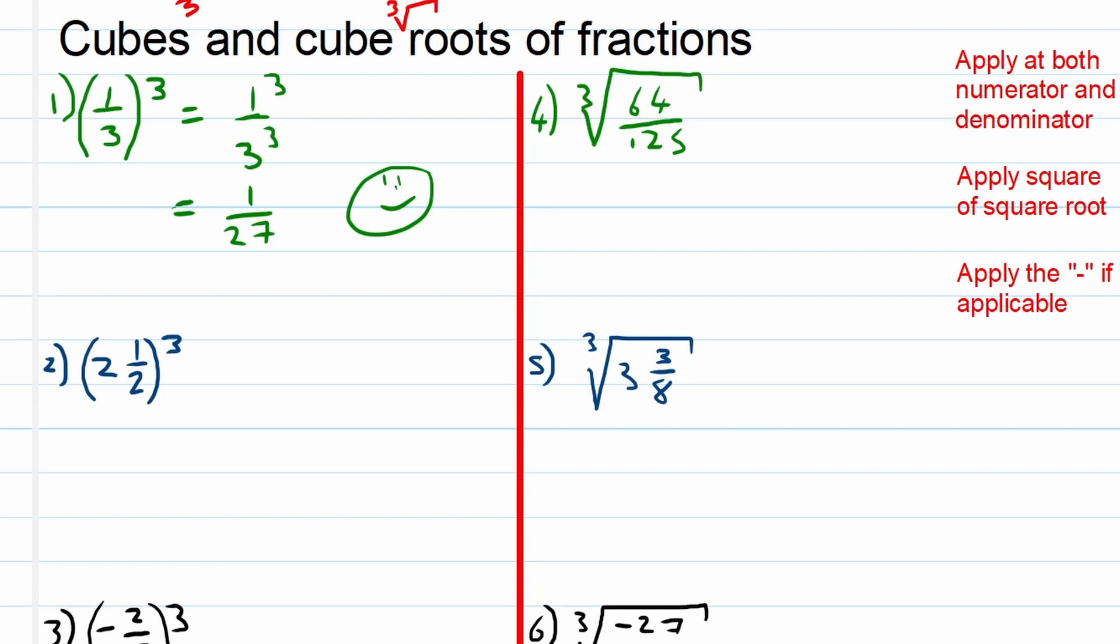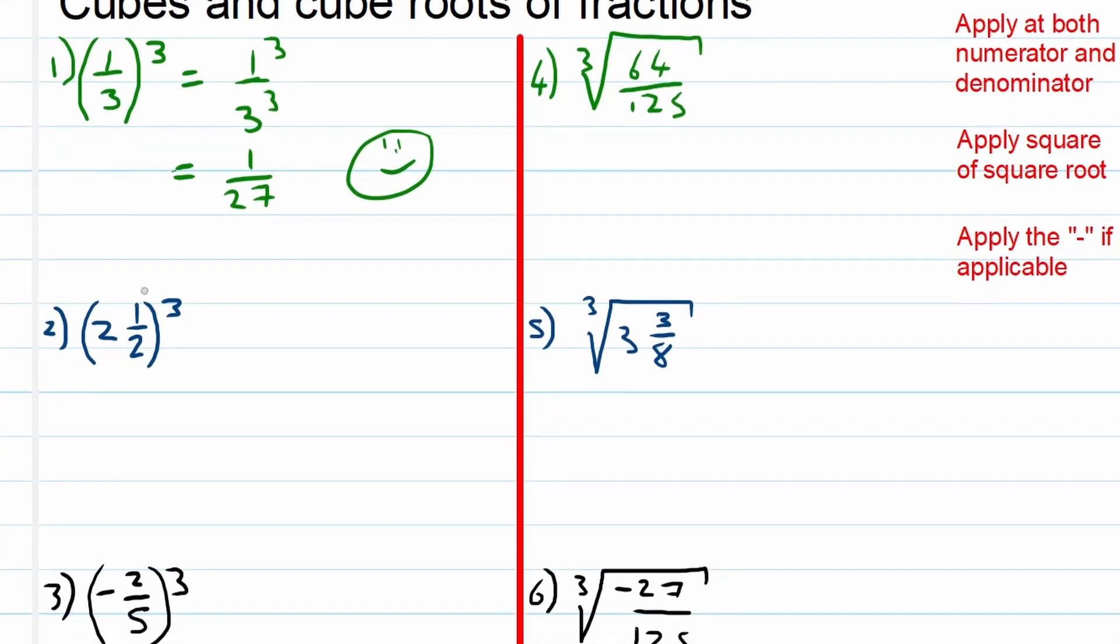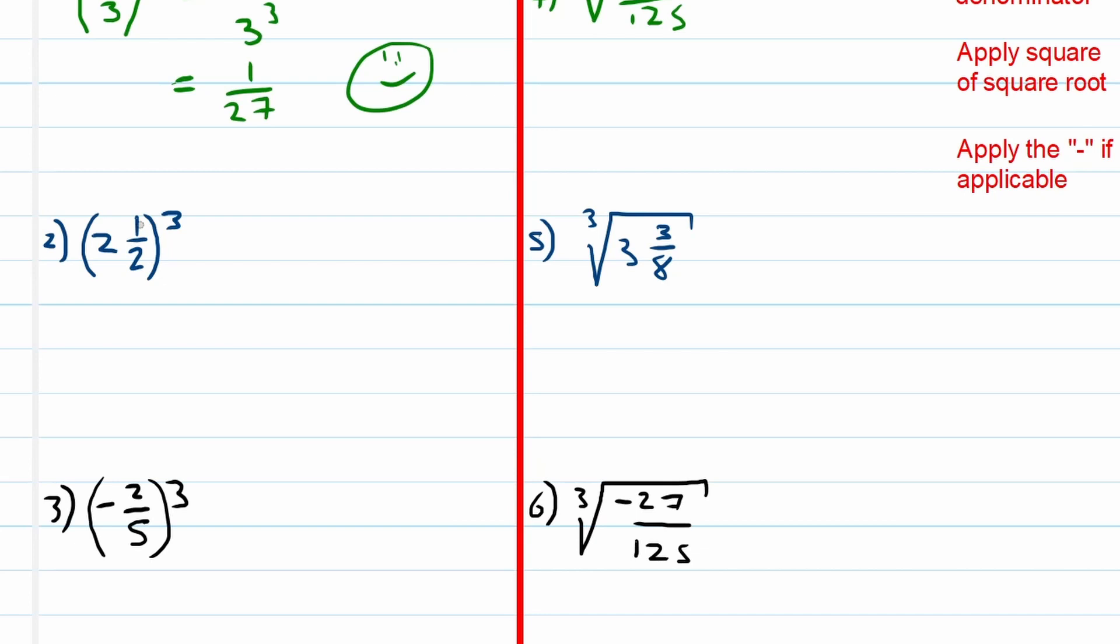Let's look at the second one. Whoa, we need to pause, we've got a mixed number here, right? So what's the first thing we need to do? Change the mixed number to an improper fraction. Two times two is four, four plus one is five, so this is 5 over 2 everything cubed. Now we apply our rules.